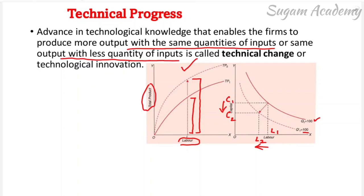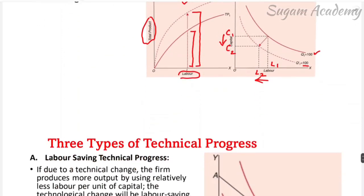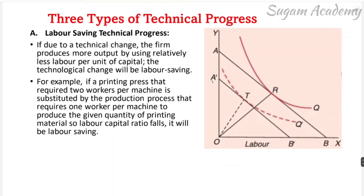There are three types of technical progress. The first is labor saving technical progress. If due to technological change the firm produces more output by using relatively less labor per unit of capital, the technological change will be labor saving. More output can be produced using less labor.